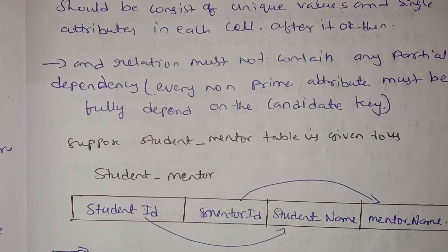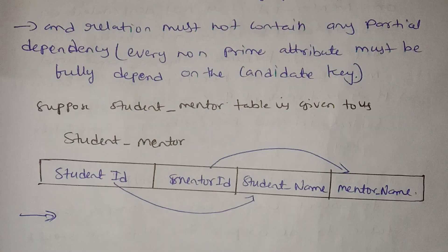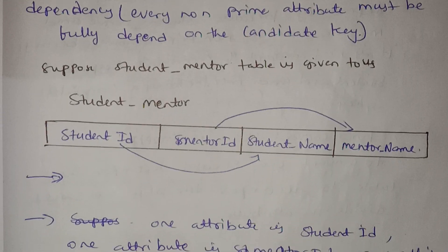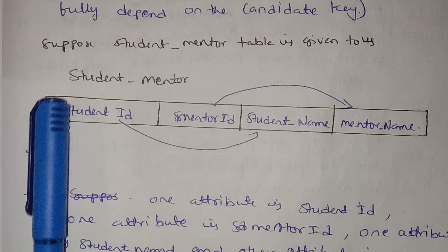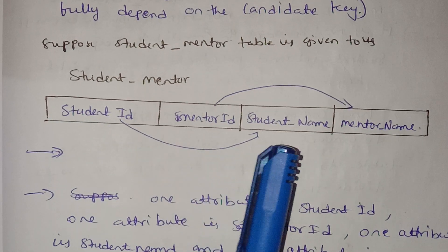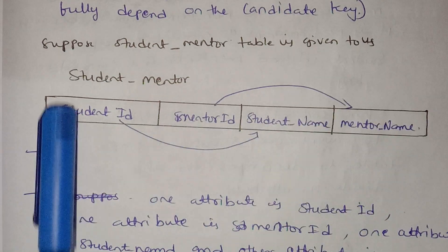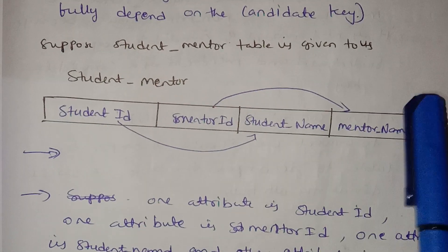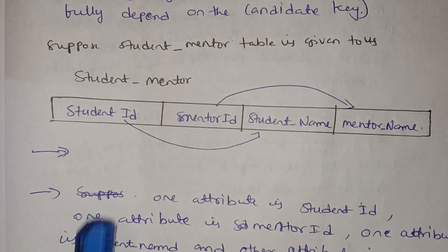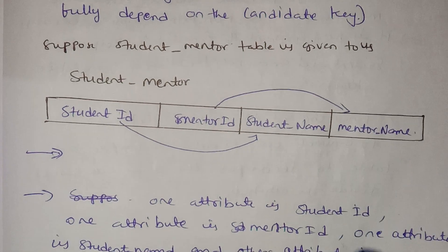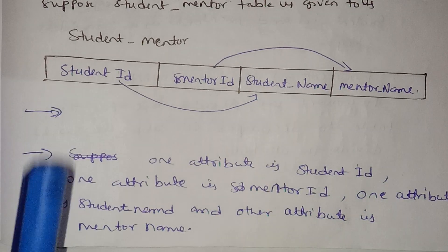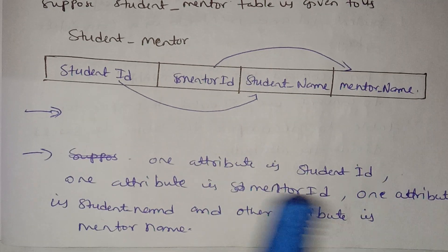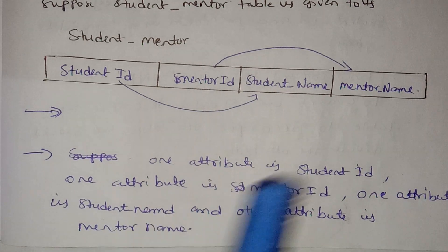Now we want to understand non-prime attributes. Let me explain with an example. Suppose Student-Mentor is a table. We have attributes like Student ID, Mentor ID, Student Name, and Mentor Name. If you want to know the student name and mentor name, we have one attribute as Student ID and one attribute as Mentor ID.